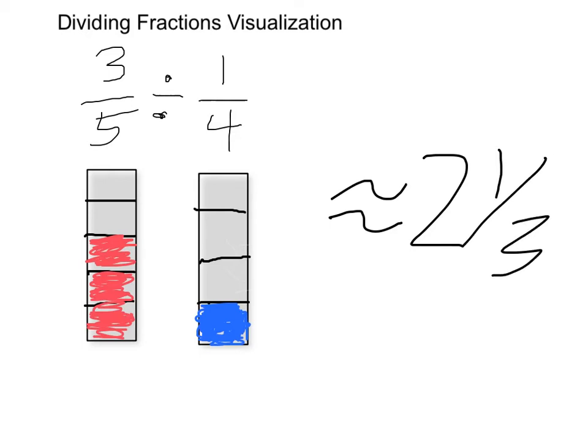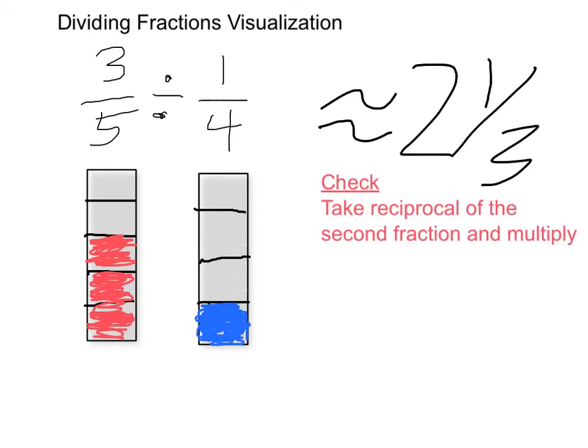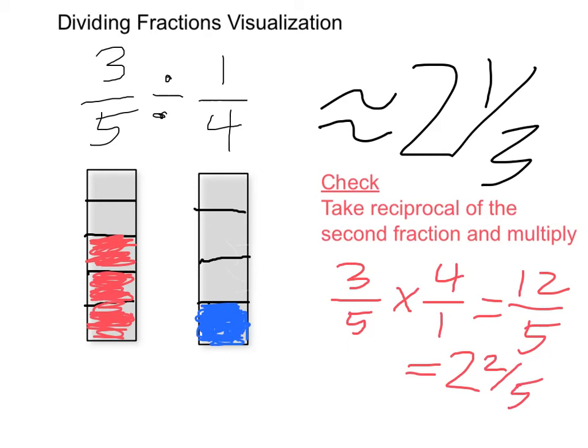Now I'm going to check using the standard algorithm, which is to turn it into a multiplication, take the reciprocal of the second fraction. That's going to give me 12 fifths, which is equal to 2 and 2 fifths, which is pretty close to our approximate answer.